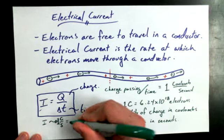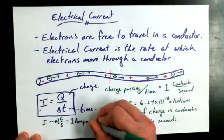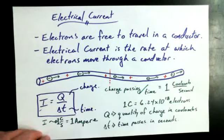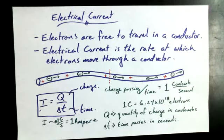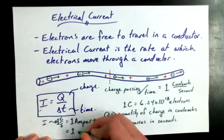Amperes, yeah. So one Coulomb per second is equivalent to saying one ampere. One ampere. A-M-P-E-R-E. One Coulomb per second is the same as saying one ampere. And one ampere often gets shortened down to just being one amp.